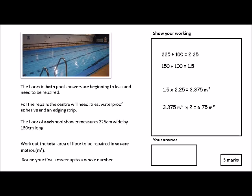The final point is rounding to a whole number. We've got 6.75, which is a decimal, so round it up and place the whole number answer: 7 meters squared. That's an easy five marks. To summarise: one mark for the unit conversions, two marks for the area calculation, one mark for doubling the answer, and one mark for rounding up.